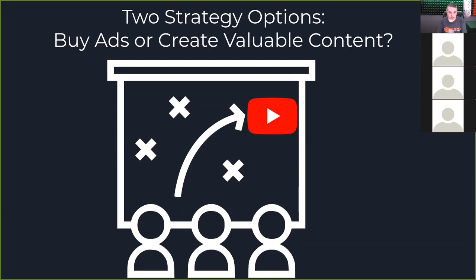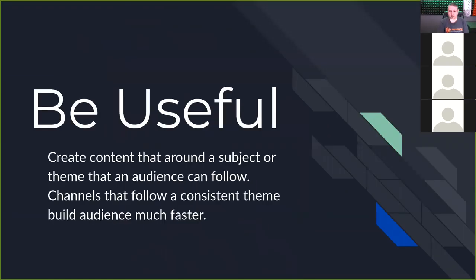The other way to do it without buying ads is to create available content. The challenge with buying ads is getting someone's attention with a commercial — people are just waiting to click that skip button. Creating compelling, engaging ads is really challenging. So if you want to get started on creating content, first: start with being useful. Create content around a subject or theme that an audience can follow. Channels that follow a consistent theme build audience much faster.